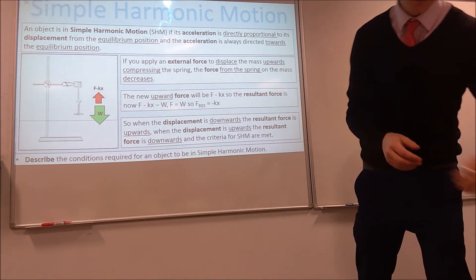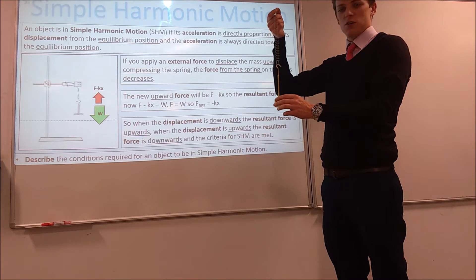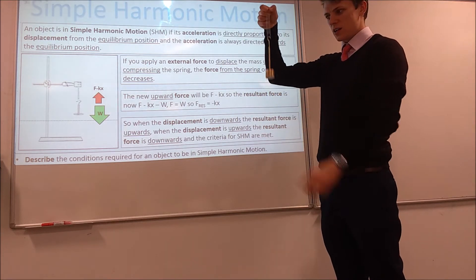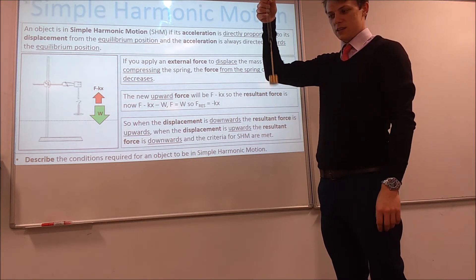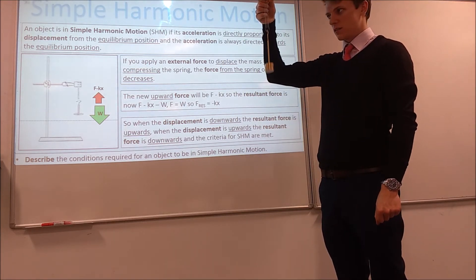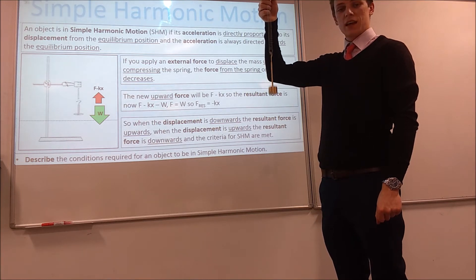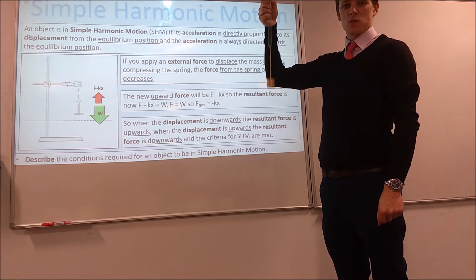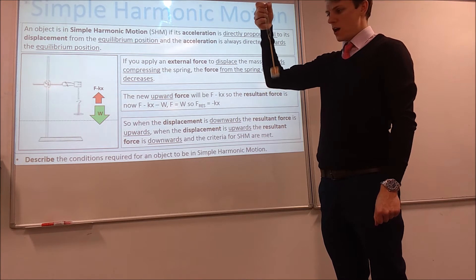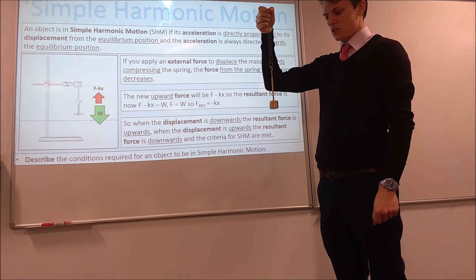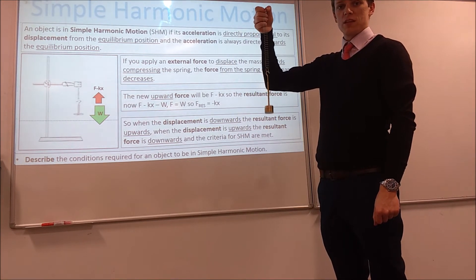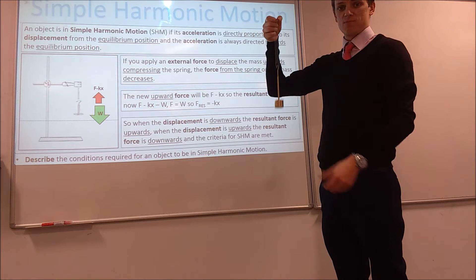In terms of what SHM looks like — essentially the mass is oscillating upwards and downwards with the spring. Sometimes you get it moving sideways as well, but this is essentially what it looks like: oscillating about the equilibrium position.